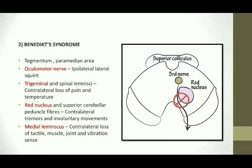In Benedict syndrome, the areas affected are the tegmentum and the paramedian area. The oculomotor nerve injury leads to lateral squint on the same side. Red nucleus involvement leads to contralateral tremors and involuntary movements — as the red nucleus is responsible for motor coordination, its lesion leads to involuntary movements and tremors. Trigeminal nuclei and spinal lemniscus injury lead to contralateral loss of pain and temperature in the face, and medial lemniscus injury leads to contralateral loss of vibration and position sense.